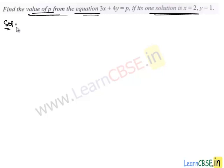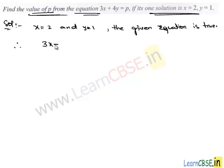Let's work out the problem. For x equals 2 and y equals 1, the given equation is true. Therefore, we take the equation 3x plus 4y equals p and substitute the values of x and y.